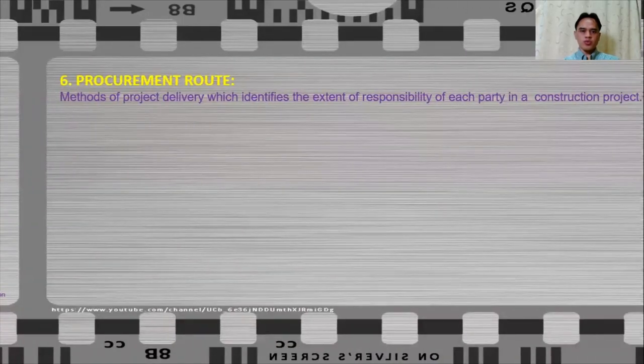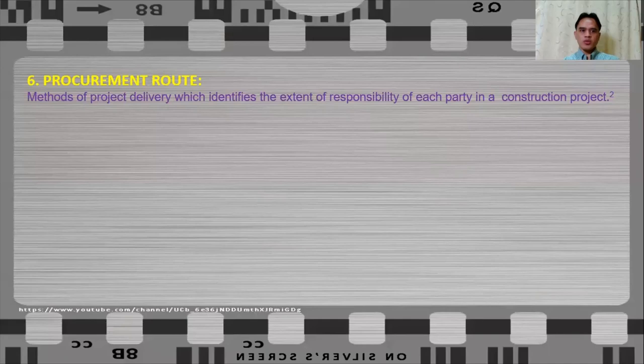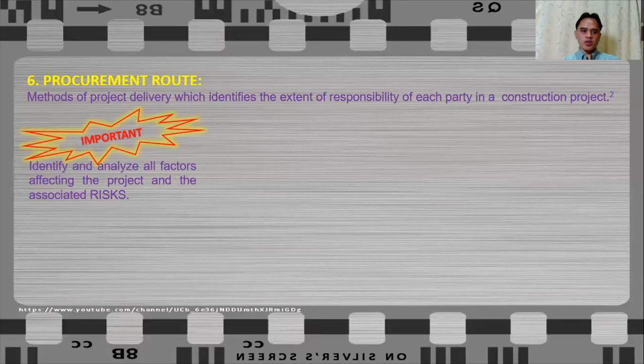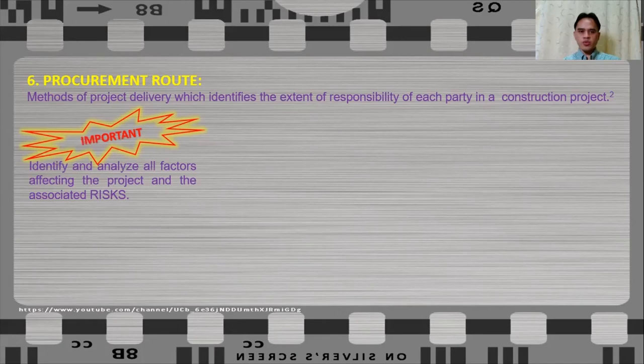Now that we knew how to develop the procurement strategy and the source of associated risks for each competing factor, let us now discuss procurement route. Procurement route are the methods of project delivery which identifies the extent of responsibility of each party in a construction project. Be reminded that it is important to identify and analyze all factors affecting the project and associated risks before you select your procurement route.